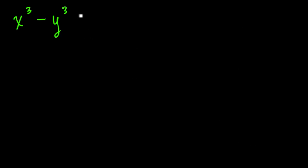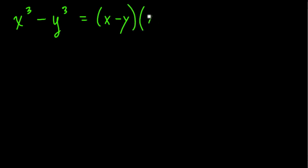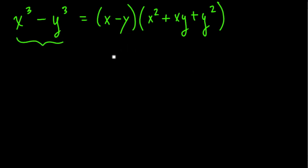So what is the idea? The formula that we're usually given in this process is: if you're finding the difference of these two cubes, here's what you do. First, you take x and then subtract y. Then you multiply that by x squared plus xy plus y squared. The idea is that you're refactoring this expression into these two terms.